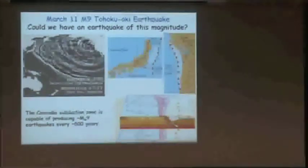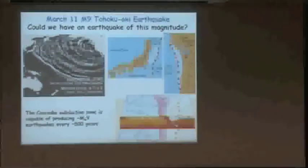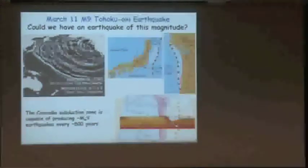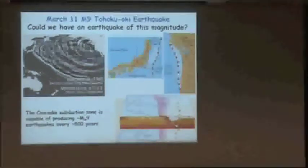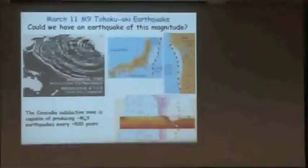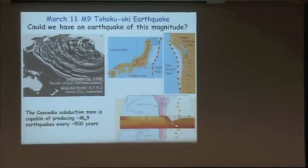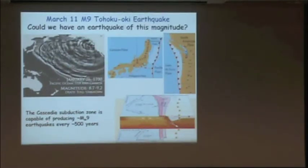In the 1990s, people started looking for evidence of big earthquakes and found sands from a tsunami along the coast of Washington, dated to 1710 plus or minus 60 years. Presenting this at a scientific meeting in Japan, a Japanese scientist noted that Japan had a tsunami on January 26th, 1700, with no associated earthquake — suggesting it may have been from Cascadia. We now think the last Cascadia earthquake was on January 26th, 1700.